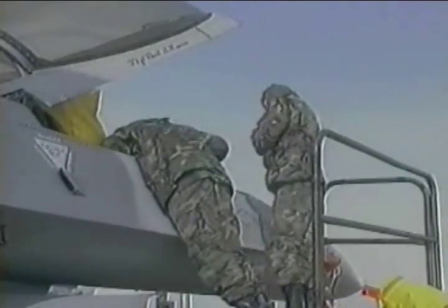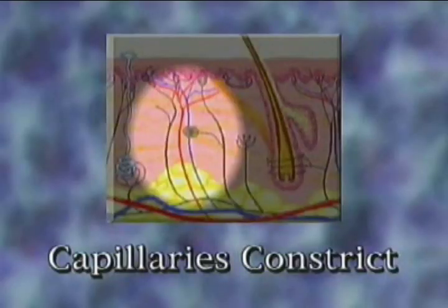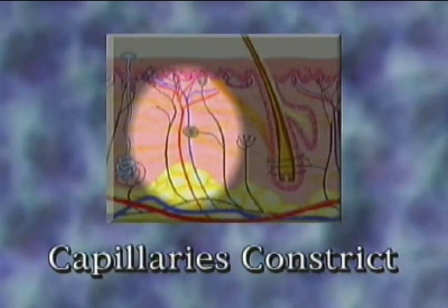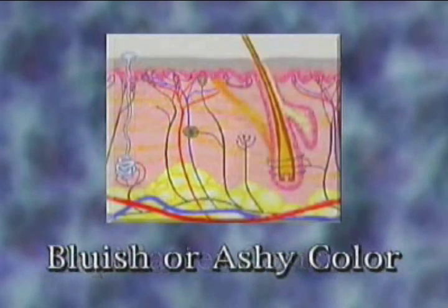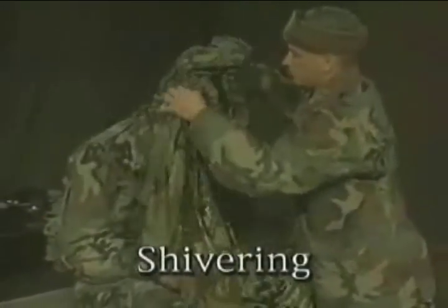Evaporation will also cause the body temperature to go down. For this reason, it is suggested you wear fabrics that breathe. Once body core temperature starts to drop, the body will begin to defend itself. Capillaries and smaller vessels near the surface of the skin will constrict to keep blood from coming in contact with the cooler skin, giving the skin a bluish or ashy color. Shivering will usually be the next symptom.